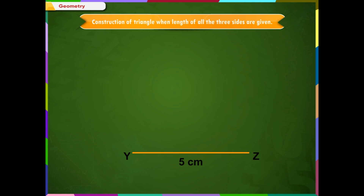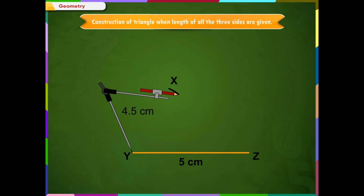Step 2: From Y, point X is at a distance of 4.5 cm. So, with Y as center, draw an arc of radius 4.5 cm.